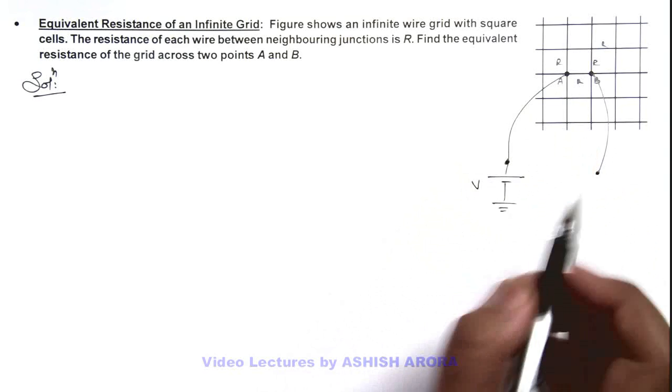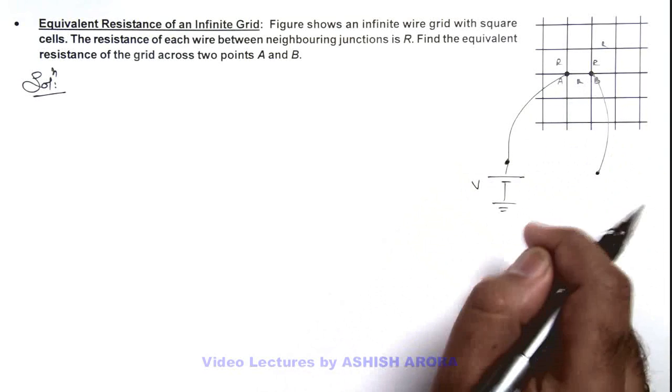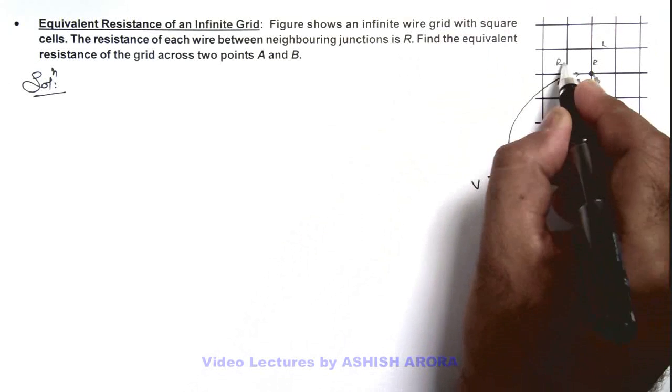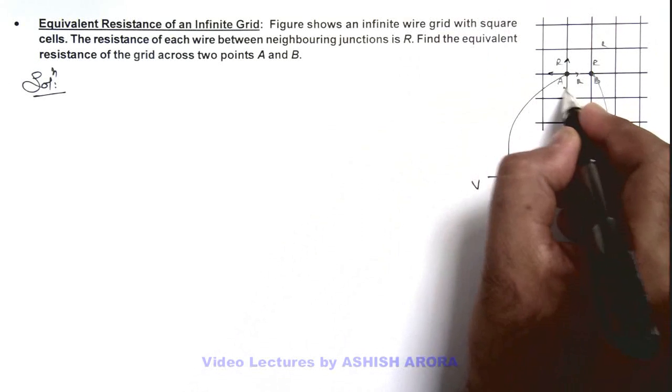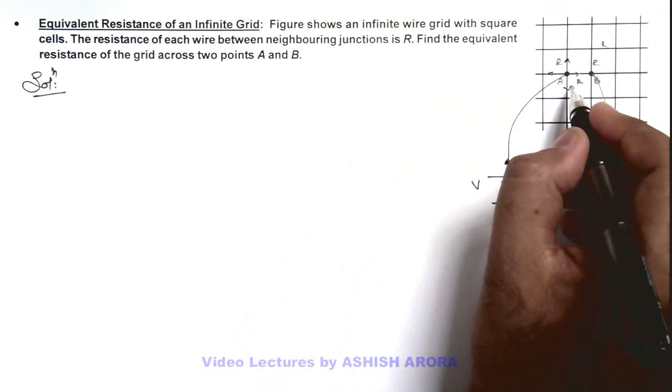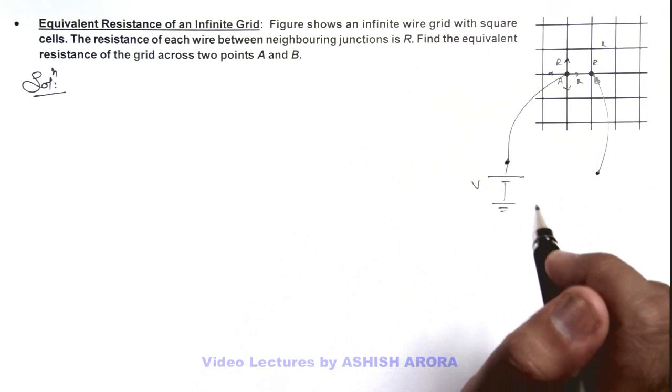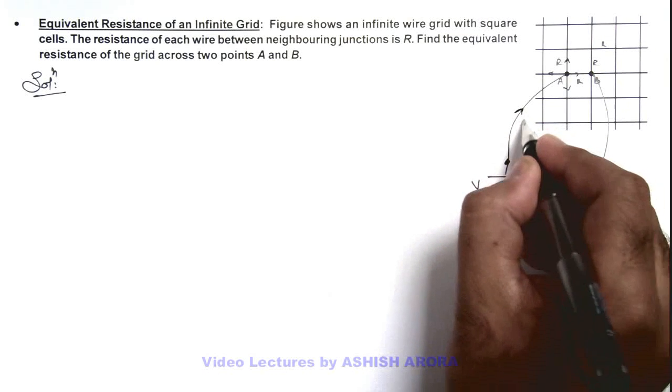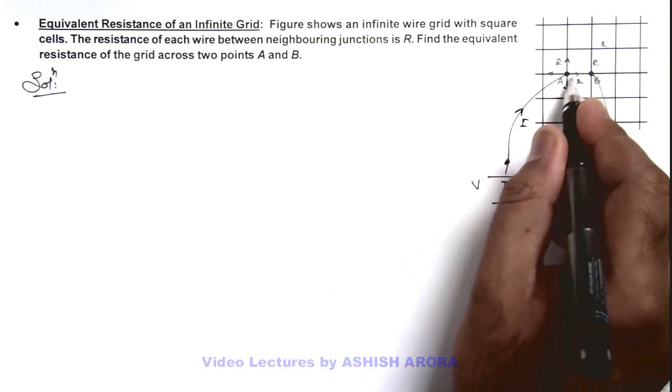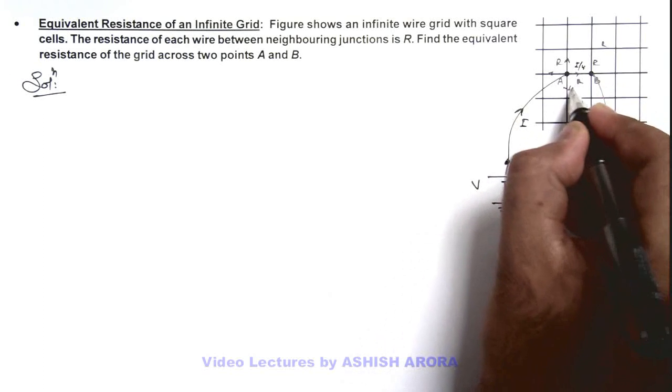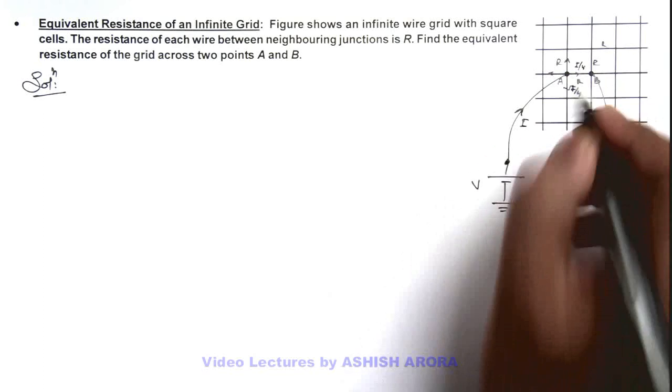And say if we consider B terminal to be open, then due to symmetry, in every branch connected to A, all these four branches, the current will be equally divided because here we are assuming B is to be kept open. So if a current I is getting into terminal A, it will be divided as I by 4, by 4, by 4, and so on in all four branches.